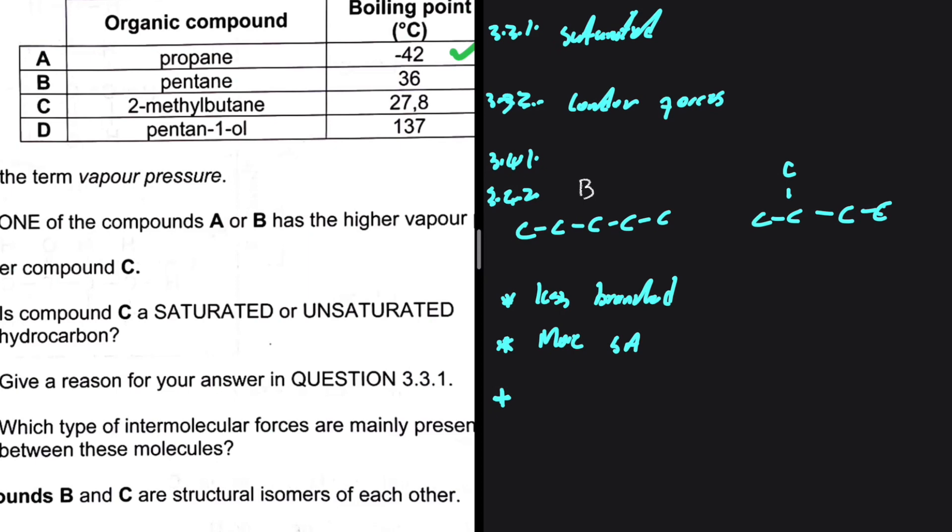stronger intermolecular forces. If the intermolecular forces are stronger, more energy will be required to overcome the intermolecular forces. And consequently, a higher boiling point, just like we can see.